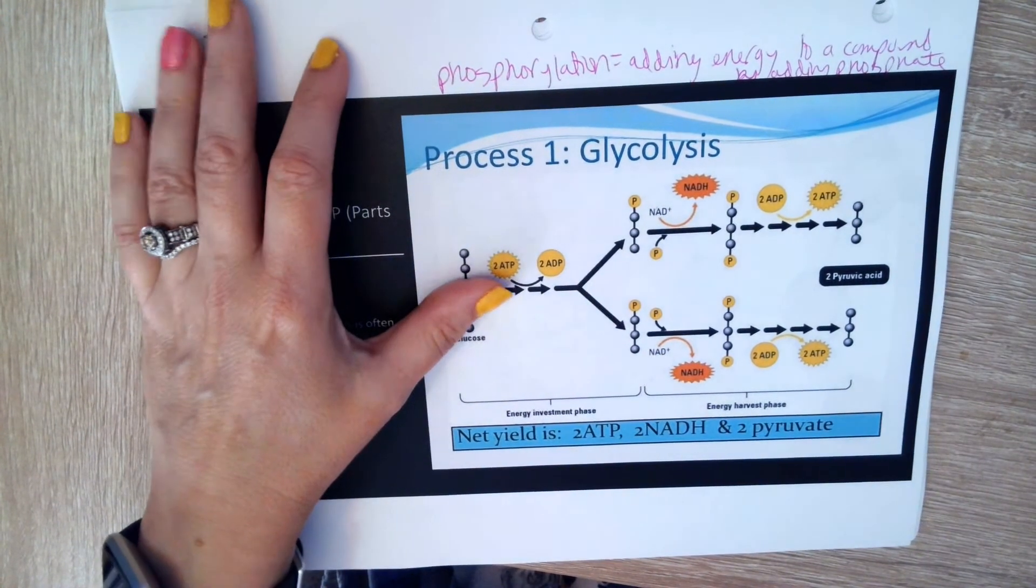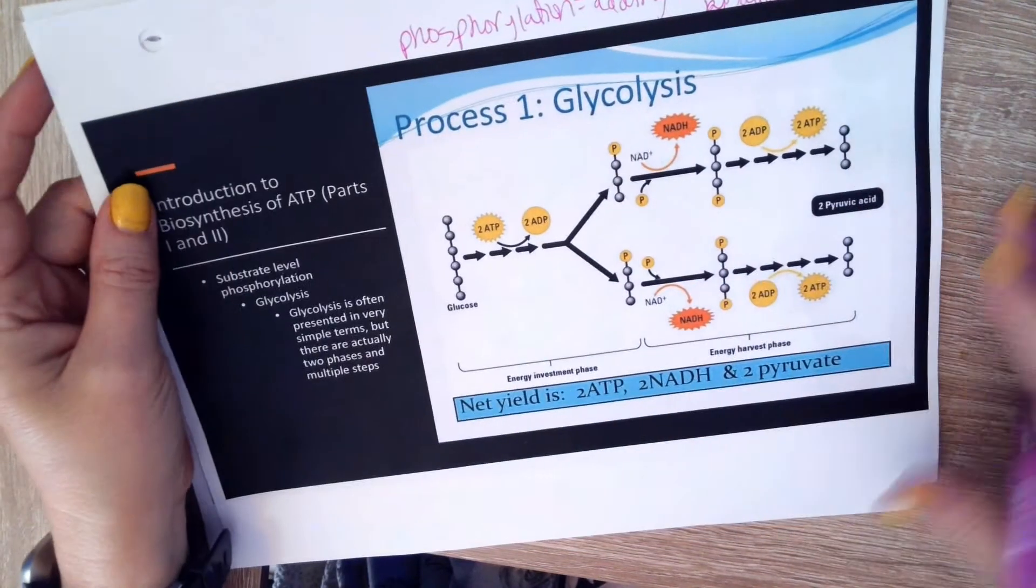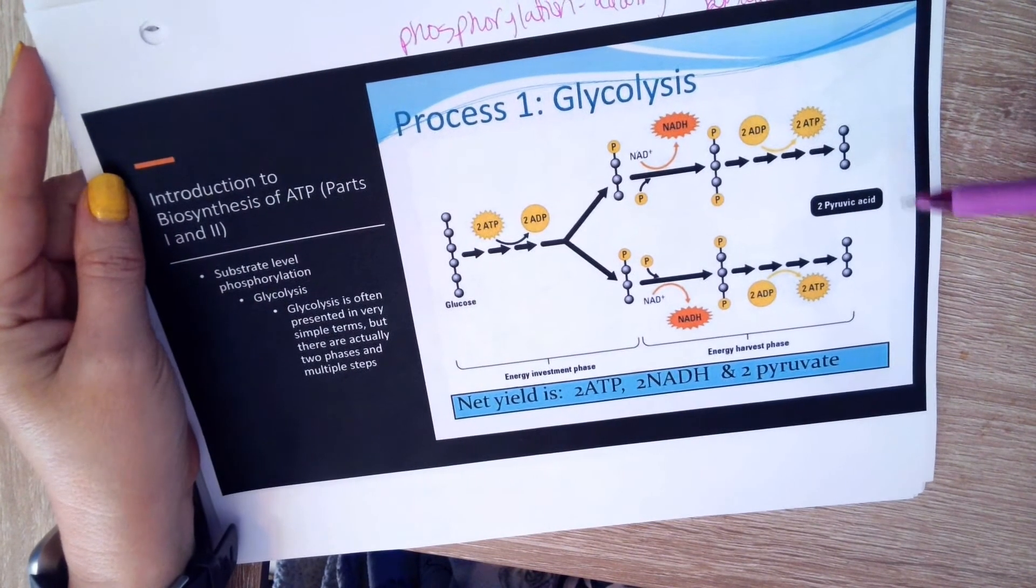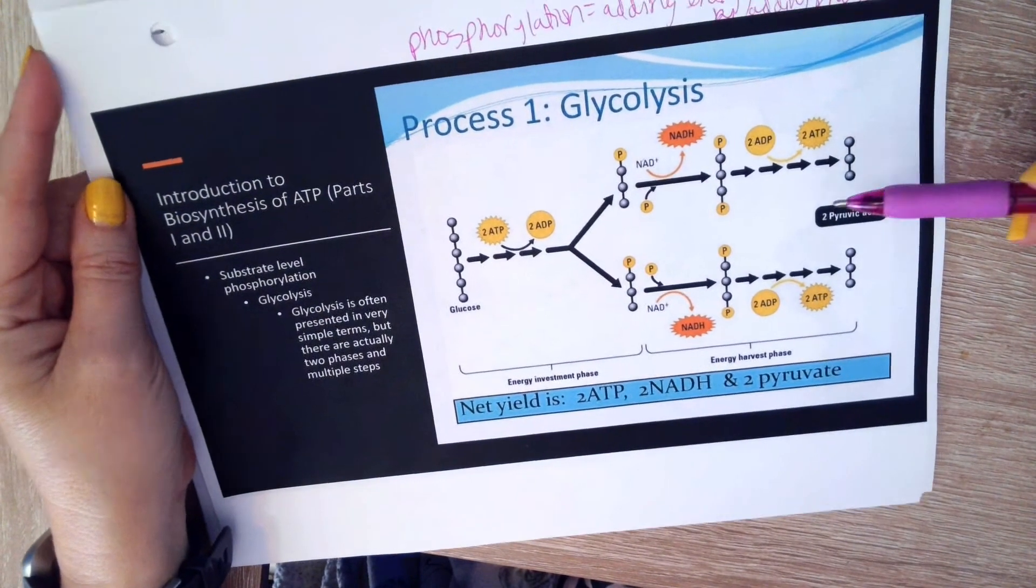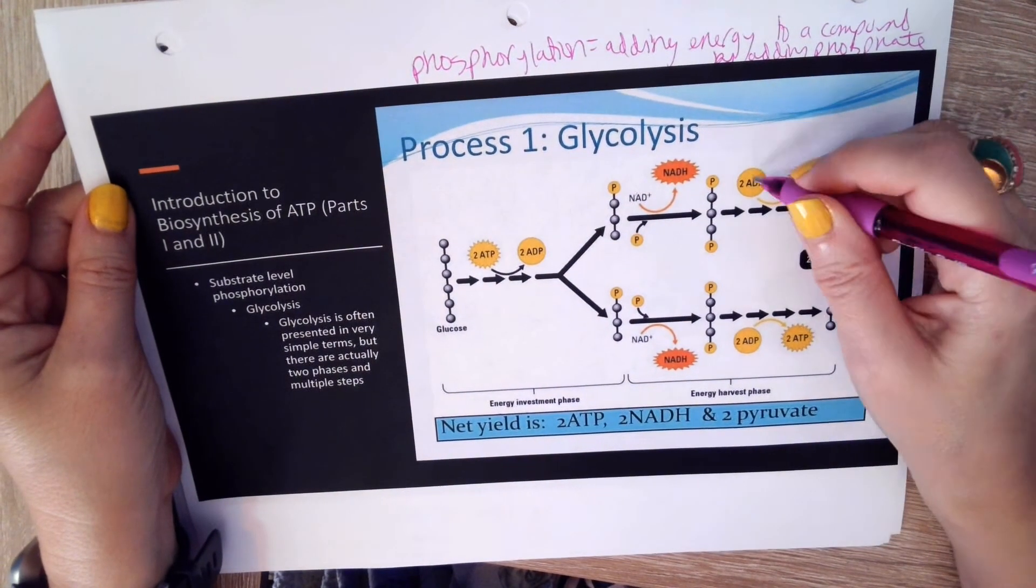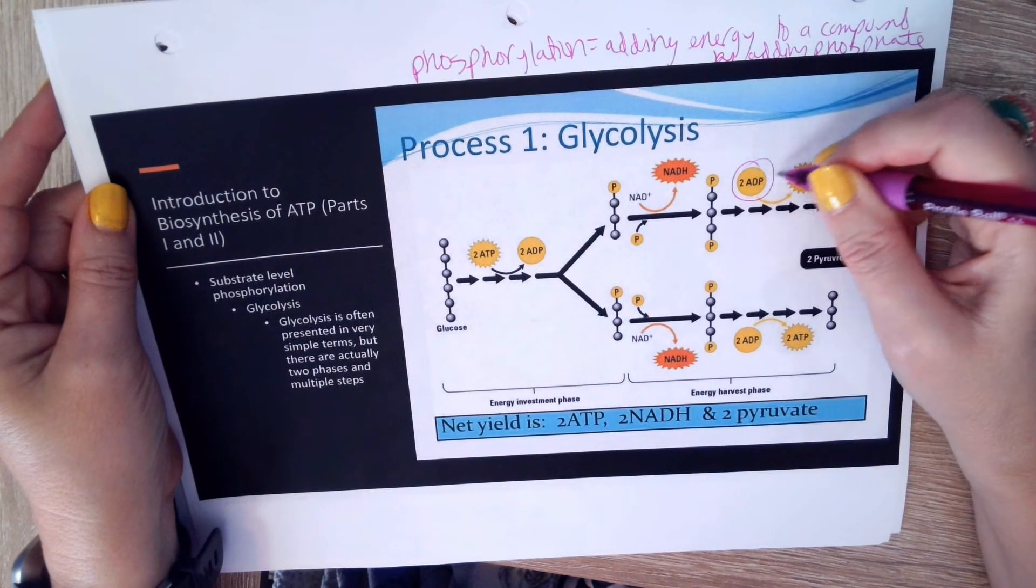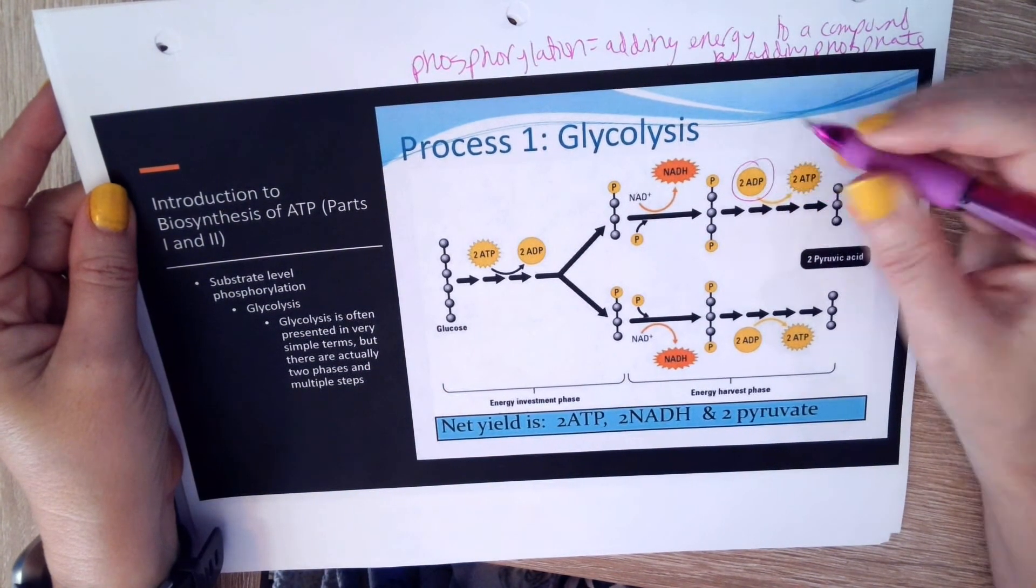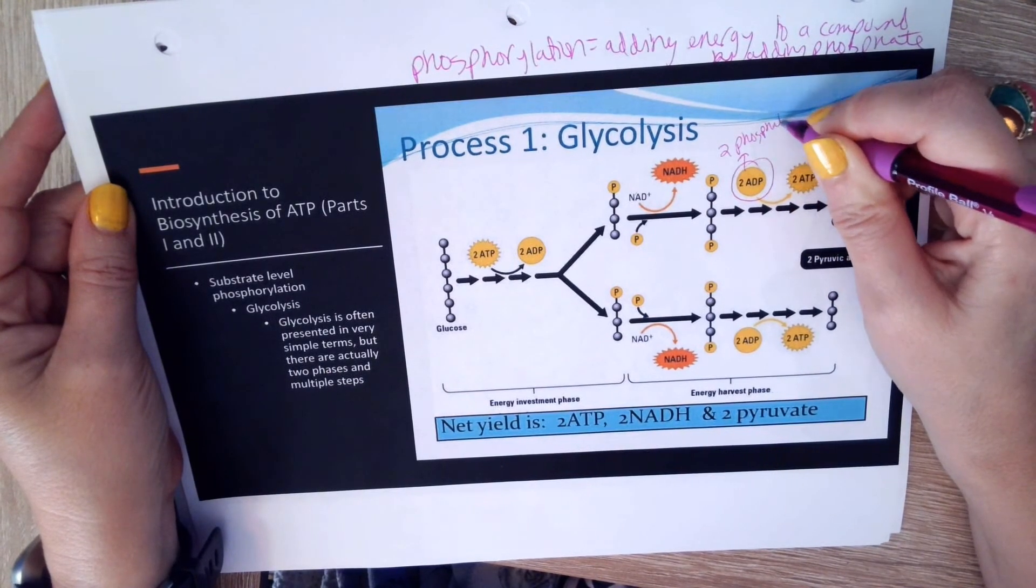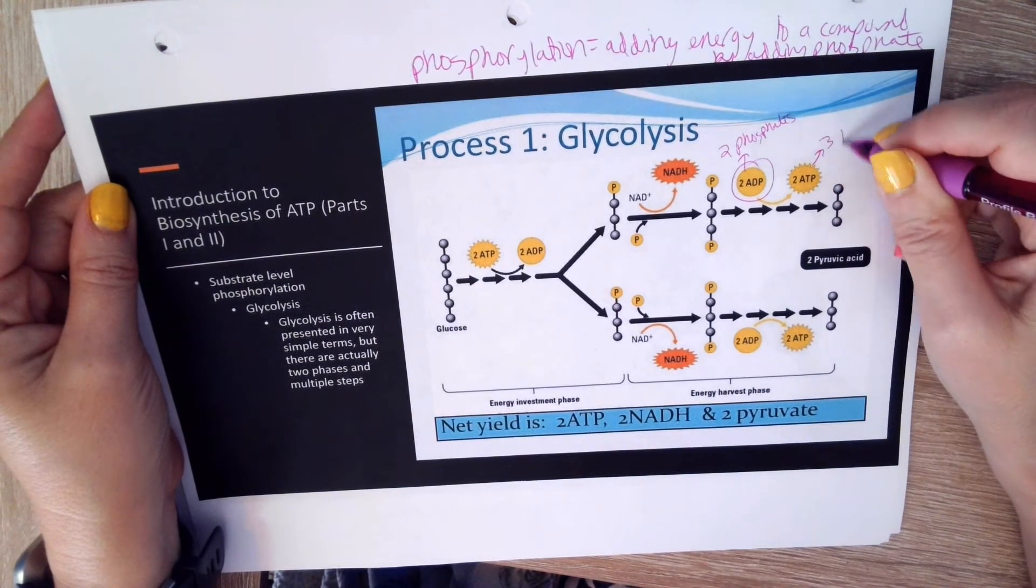When you break that phosphate off, then you are releasing the energy. We've seen already that we make a net of two ATP from glycolysis, so we are phosphorylating something in glycolysis, and what we are phosphorylating is ADP. So ADP has two phosphates. When we add a phosphate, then we have ATP, and that has three phosphates.